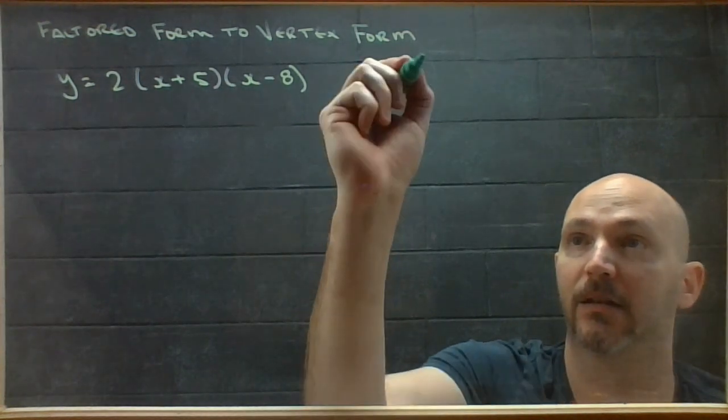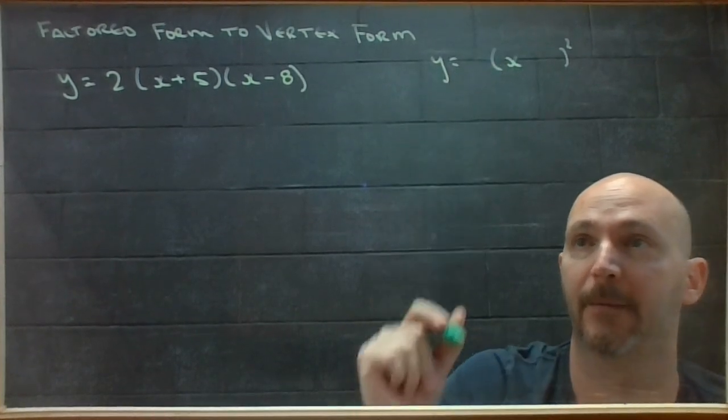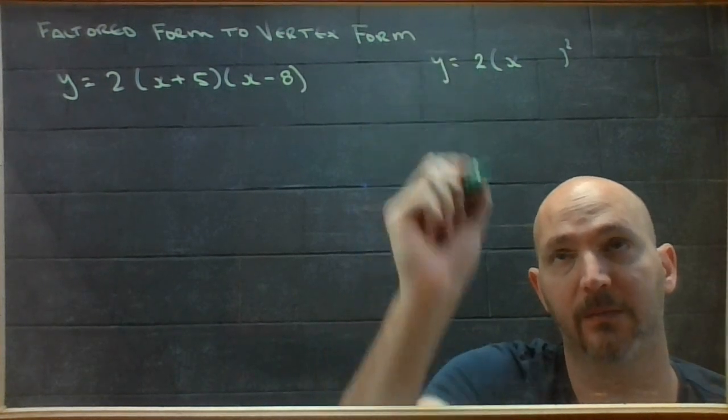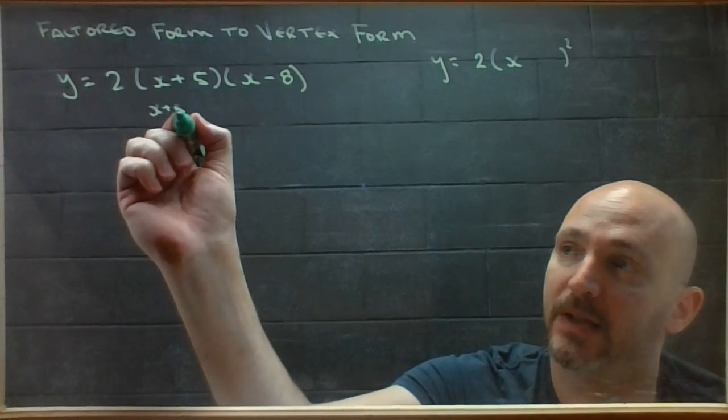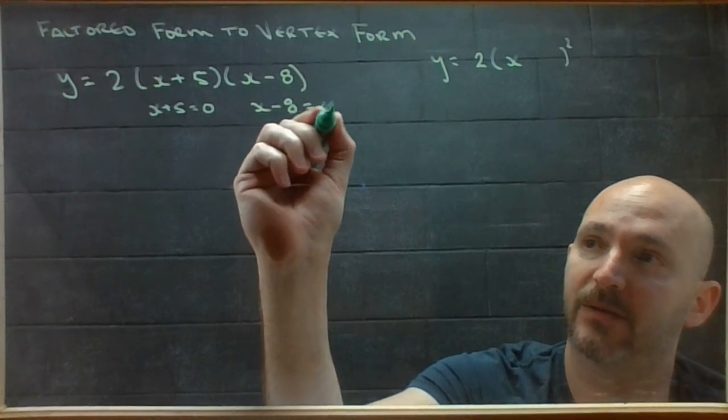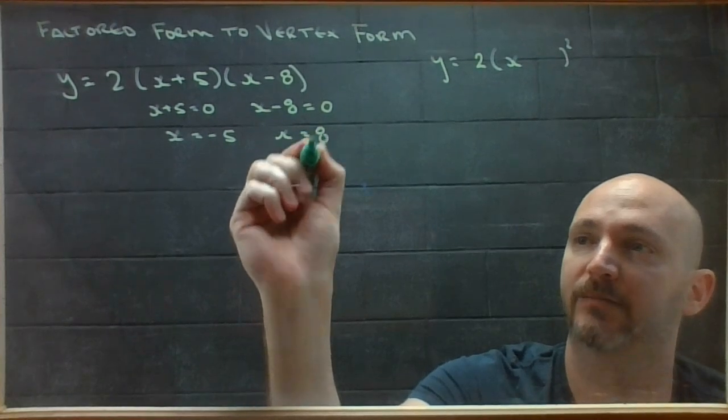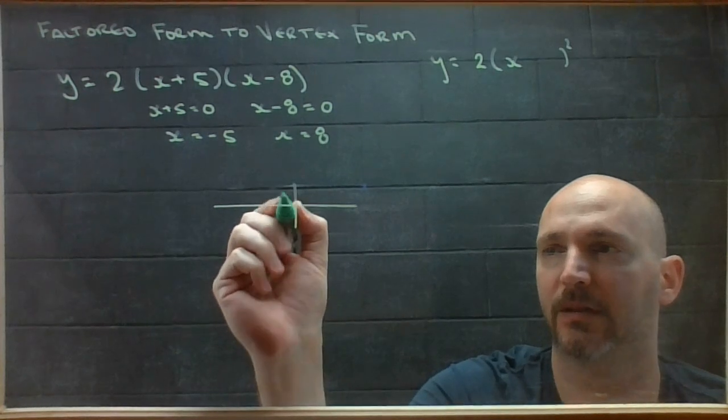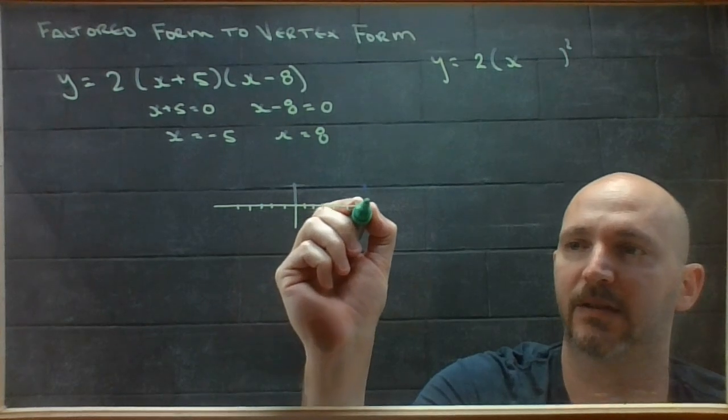Alright, so we need our standard setup for a vertex form. I know that my transformation factor goes out in front. I know I'm going to have an x intercept when this equals 0 and another one when this equals 0. Which gives me x is negative 5 and x is 8. So, on a number line.